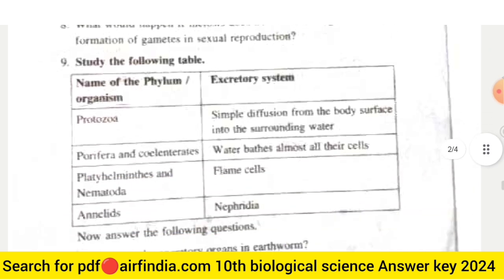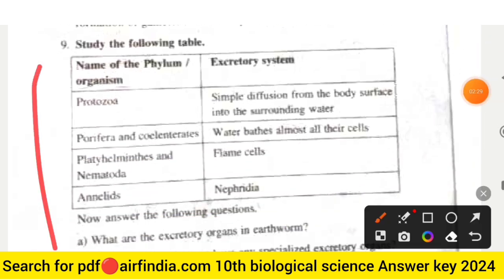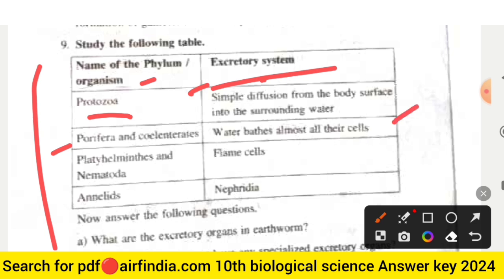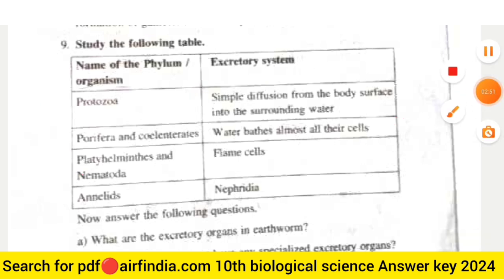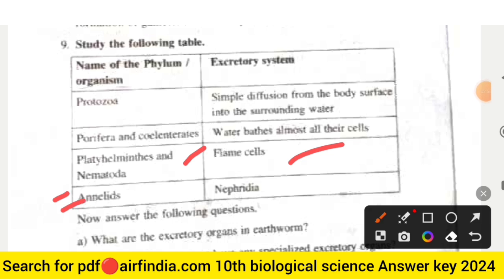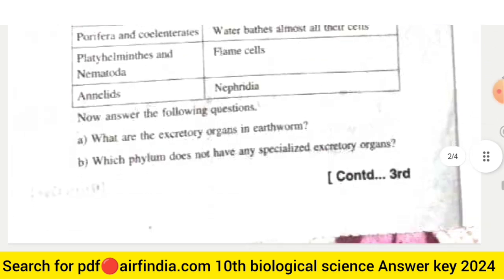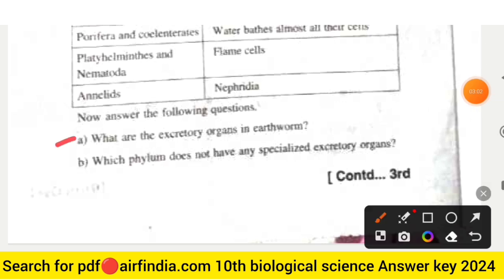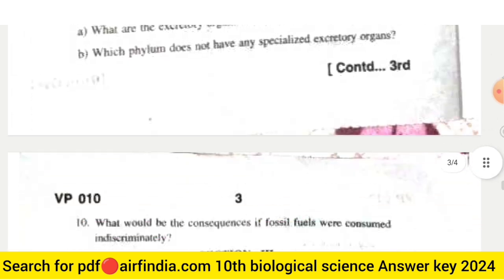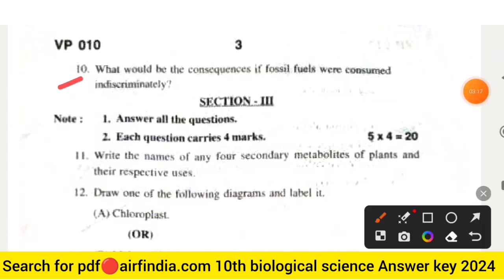Question nine: study the following table of organisms and their excretory systems — protozoa use simple diffusion from the body surface; porifera and coelenterates use water baths through almost all their cells; platyhelminthes and nematodes use flame cells; and annelids use nephridia. Questions: what are the excretory organs in earthworm, and which phylum does not have any specialized excretory organs?